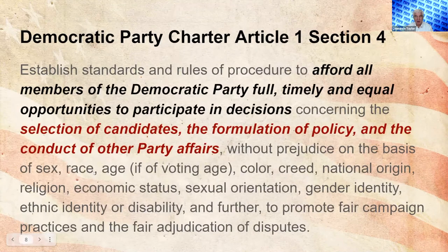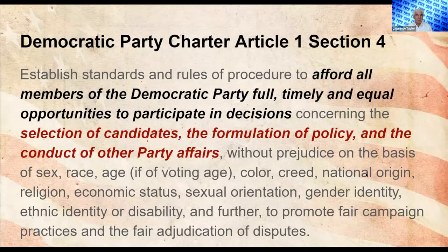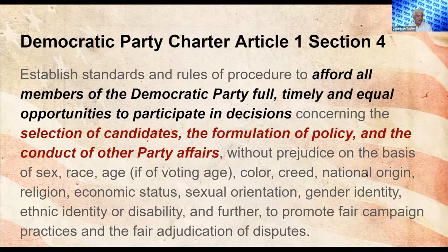In Article One, Section Four, there is very interesting language. It says the party shall establish standards and rules to afford all members of the Democratic Party full, timely, and equal opportunities to participate in decisions concerning the selection of candidates, the formulation of policy, and the conduct of all other party affairs — without prejudice on the basis of sex, race, age, color, creed, national origin, religion, economic status, sexual orientation, gender identity, ethnic identity, or disability. This takes precedence over what has been done within the bylaws.